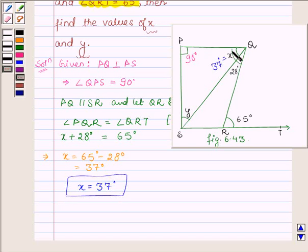So in the figure this angle is 37 degrees. Now since sum of three angles of a triangle is 180 degrees, so in triangle PQS we have angle PQS plus angle